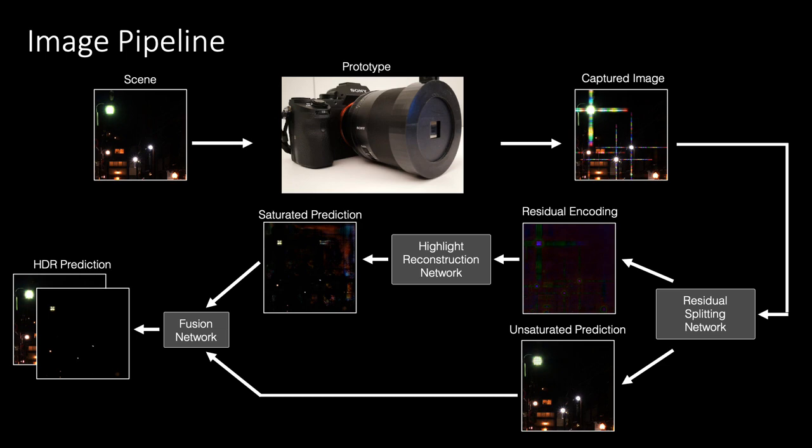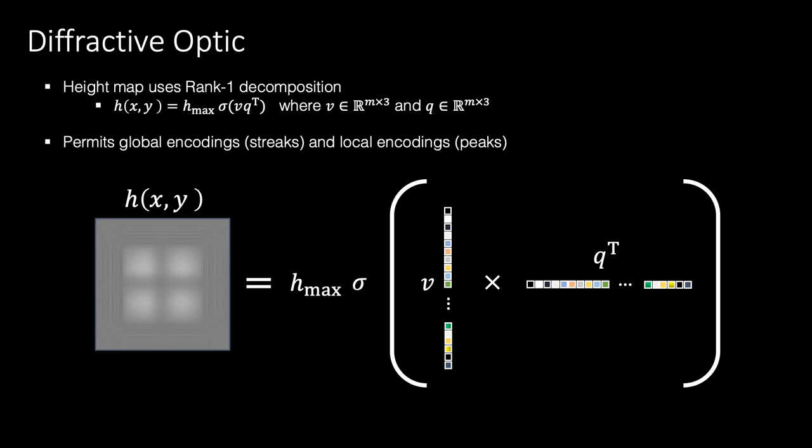After training and fabrication, we replace our optical simulation with images captured from the hardware prototype. Our DOE's height map is parameterized using a rank-1 decomposition. This allows for easier training and permits both global and local optical encoding patterns.